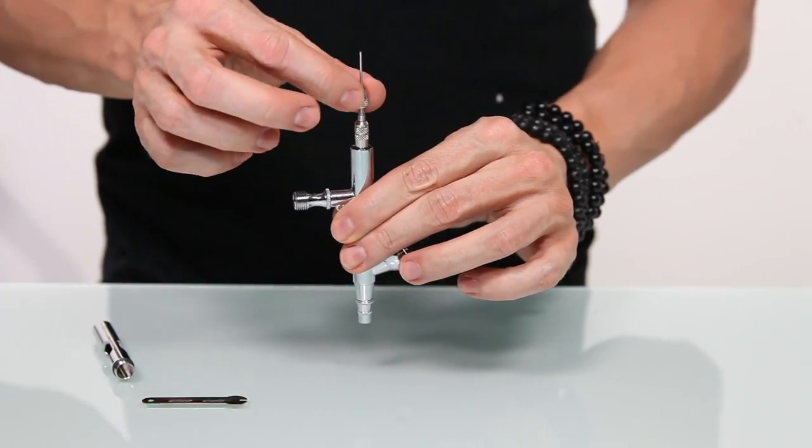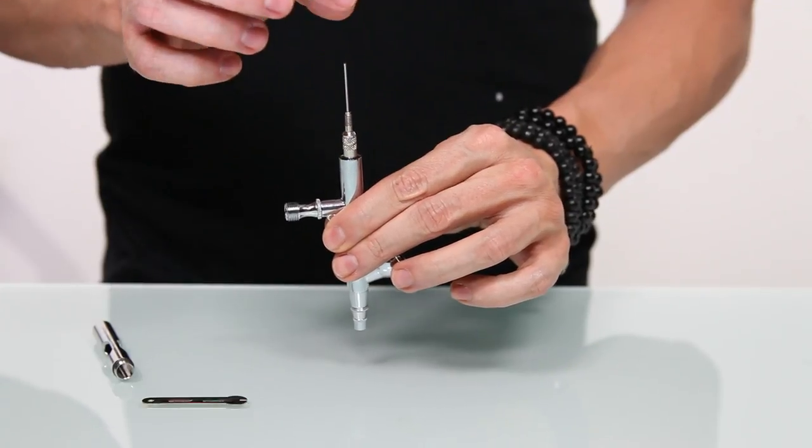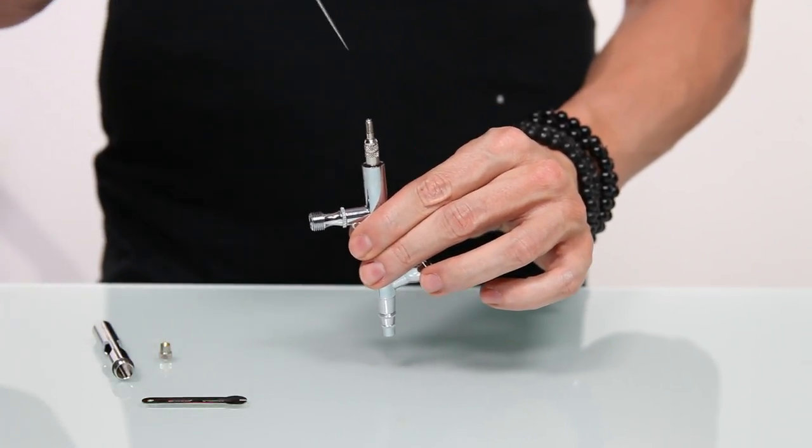Remove the tail cap at the back of the gun and then loosen and remove the needle chucking nut. This will allow you to remove the needle.